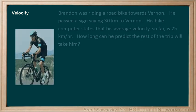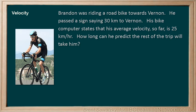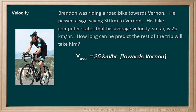Another example: Brandon was riding a road bike towards Vernon. He passed a sign saying 30 kilometers to Vernon, and his bike computer states that his average velocity so far is 25 kilometers per hour. How long can he predict the rest of the trip will take him? Is Brandon going to stay steady at exactly 25 kilometers per hour? No — the road to Vernon is a hilly one. On the steep inclines he might be going 12 kilometers per hour, while on the downhills he might reach 50 kilometers per hour. These would be his instantaneous velocities — the best estimate of his velocity at any particular instant in time. For making predictions, the average velocity would be most useful.